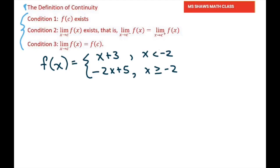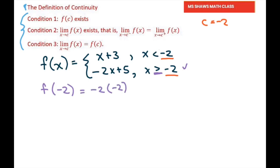For condition one, f(c) must exist. Your c is where the changes are occurring. We have two different linear functions, and it changes at negative 2, so c equals negative 2. We must find f(-2). Since x equals negative 2 falls in the lower portion, we plug in: negative 2 times negative 2 plus 5 equals 9. So f(-2) = 9 — it exists, so condition 1 passes.